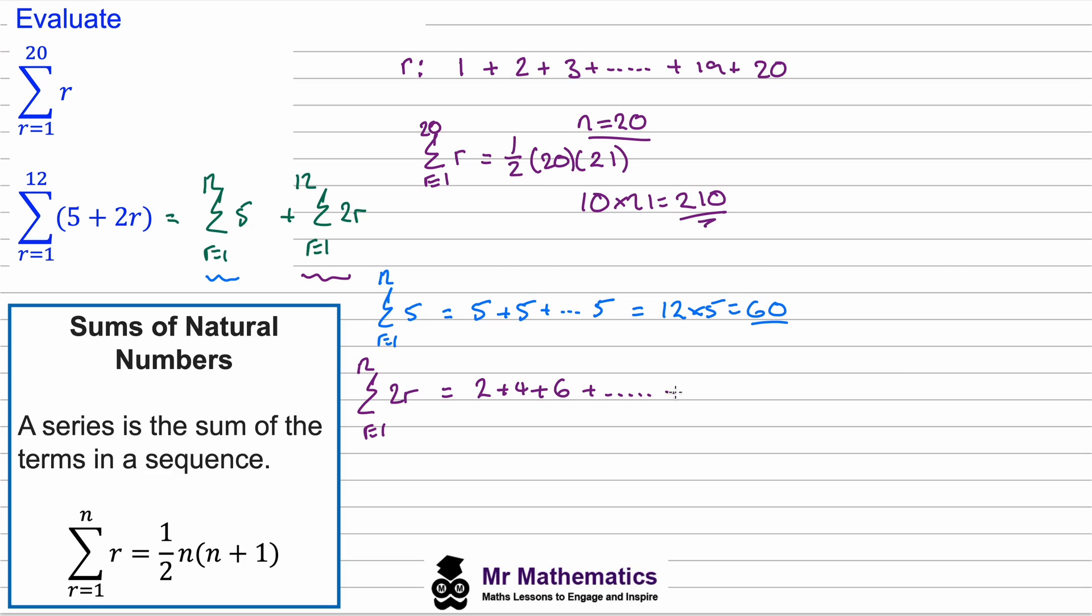But we can make this simpler. Can you see that 2 is a factor of every term in this series? So we can pull this 2 out in front, then we'll have 1 plus 2 plus 3, all the way up to plus 12.